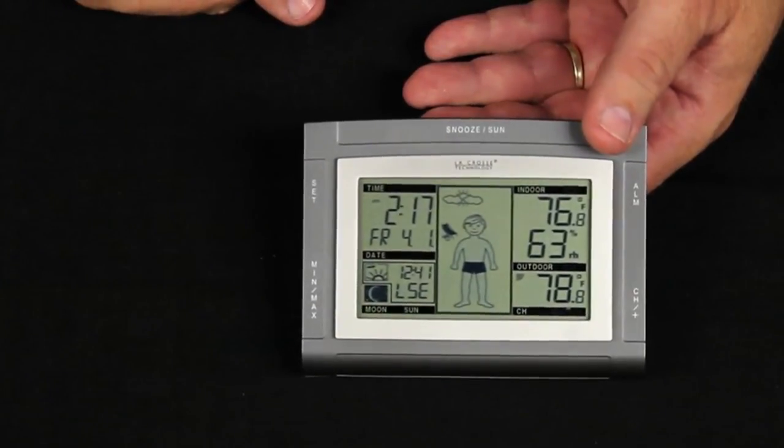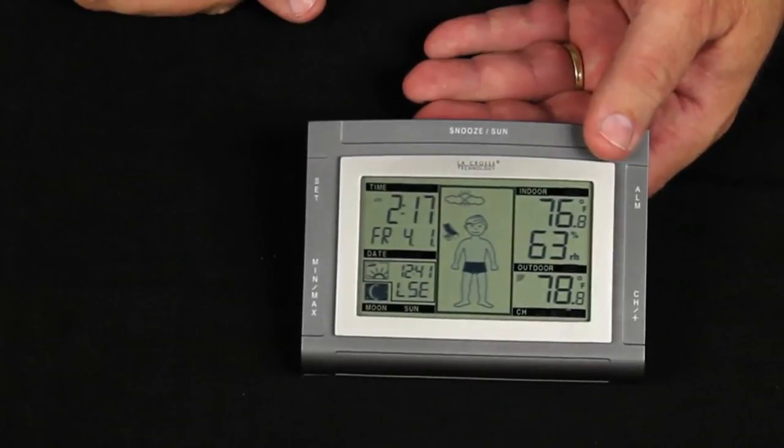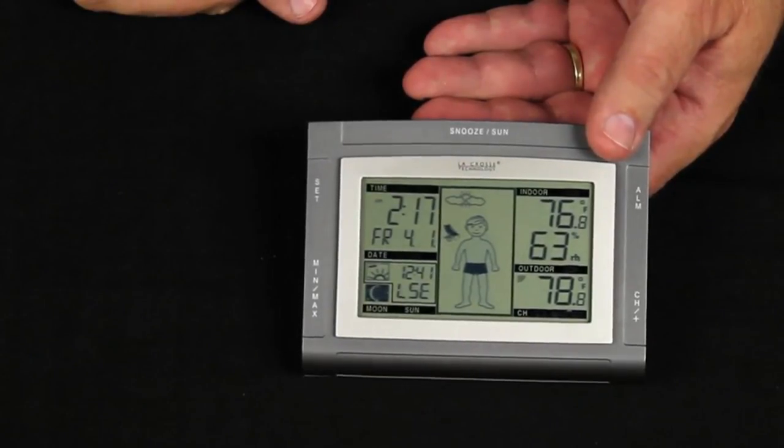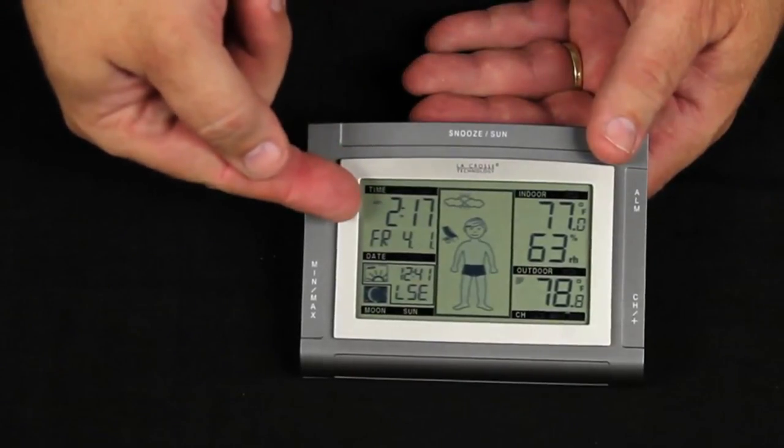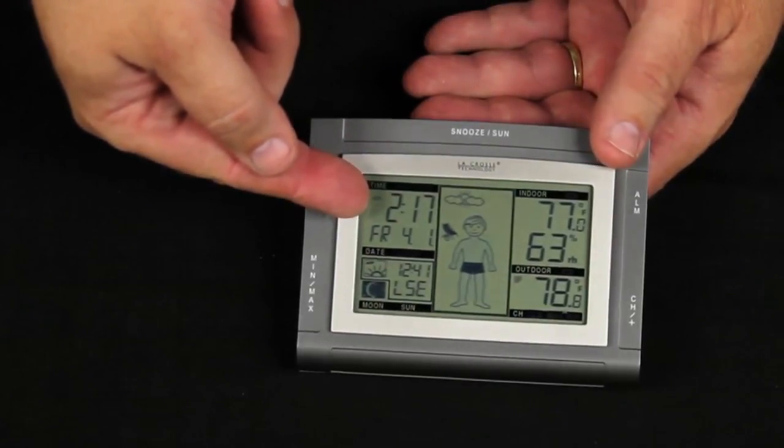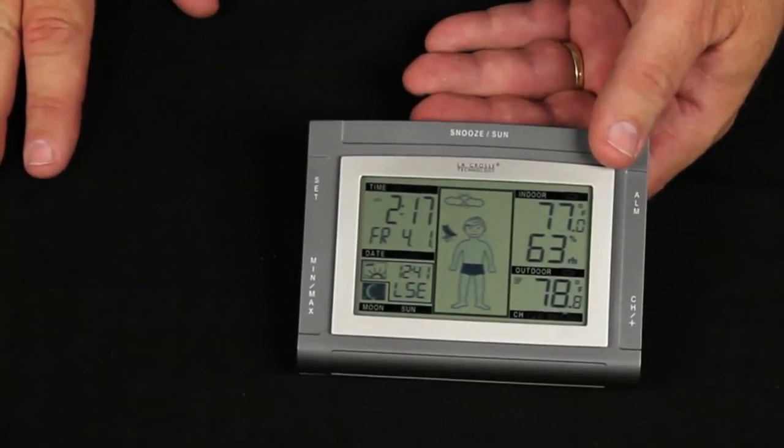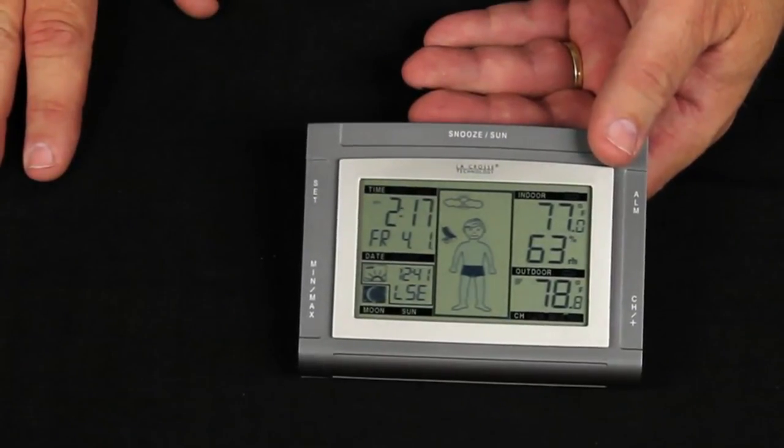Now understand that these are going to be off by an hour or so until the clock has picked up the WWVB time signal. When it picks that up, there will be an icon showing right next to the time on the edge here. It's going to look like a triangle with three arcs above it.